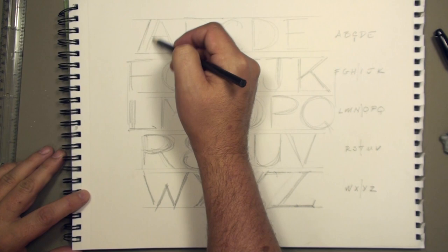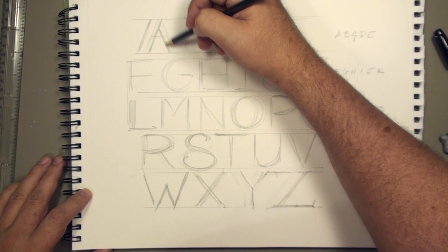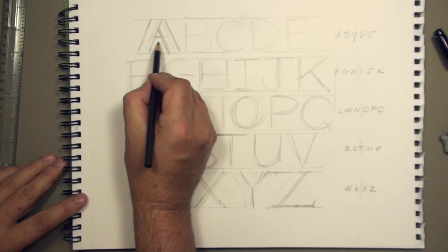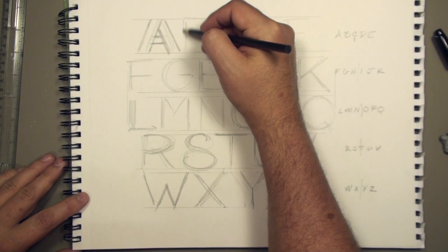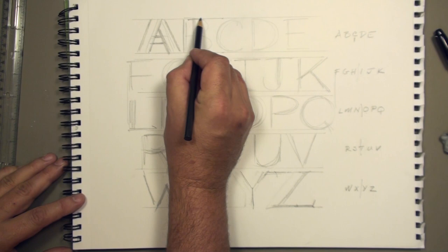Again, if you haven't gotten here to catch up with us, pause and then resume. But you can see we're essentially just taking the stick letters and we're making them into wider, rectangular, parallelogram-type shapes. Again, same with the B.